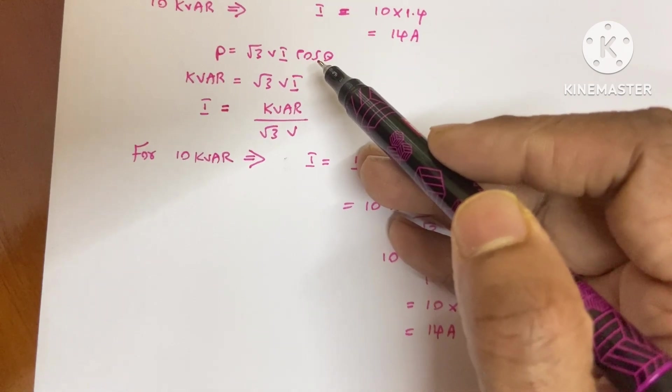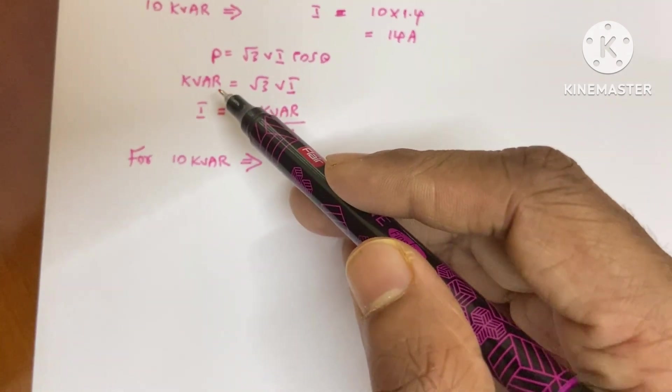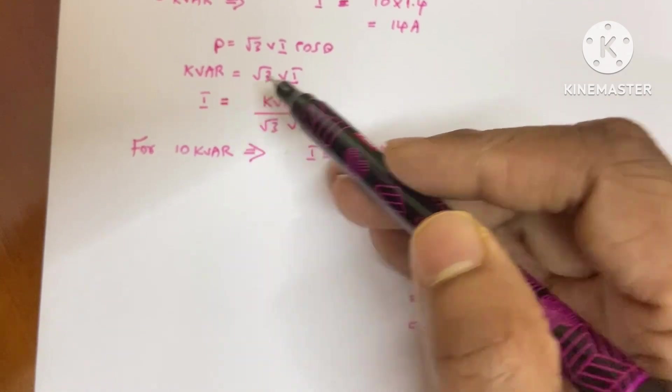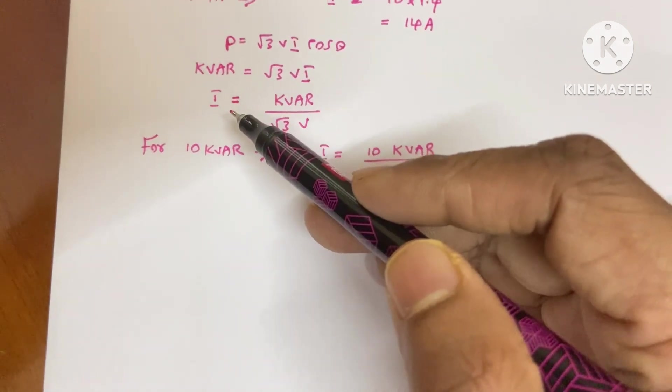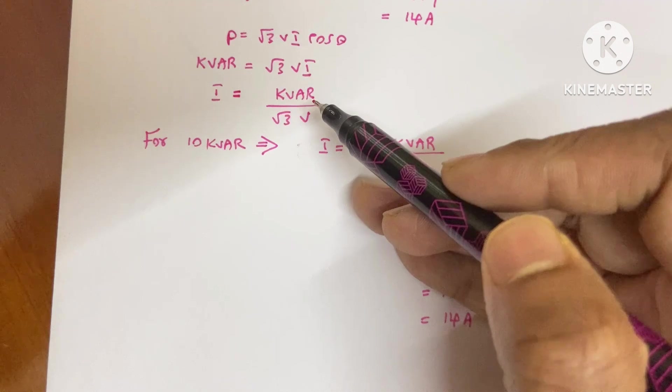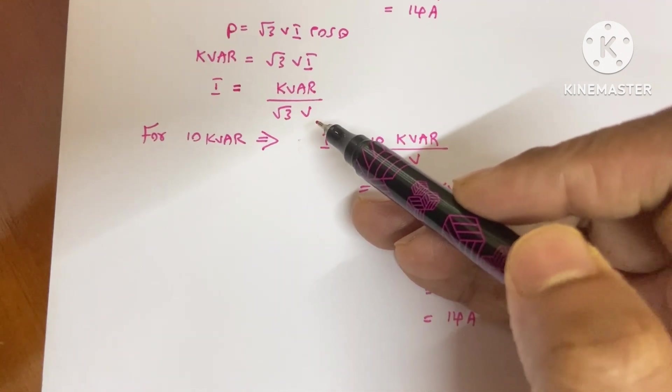There's no cosθ term for the capacitor bank KVAR equation. From this, we can derive I. The current I equals KVAR divided by √3 V.